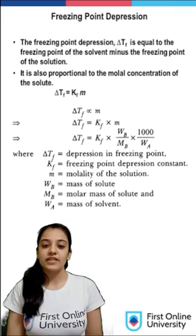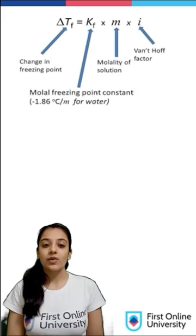Kf is the freezing point depression constant or cryoscopic constant and has a value of minus 1.86 degrees centigrade per molal for water. It can also be expressed in terms of the Van't Hoff factor i.